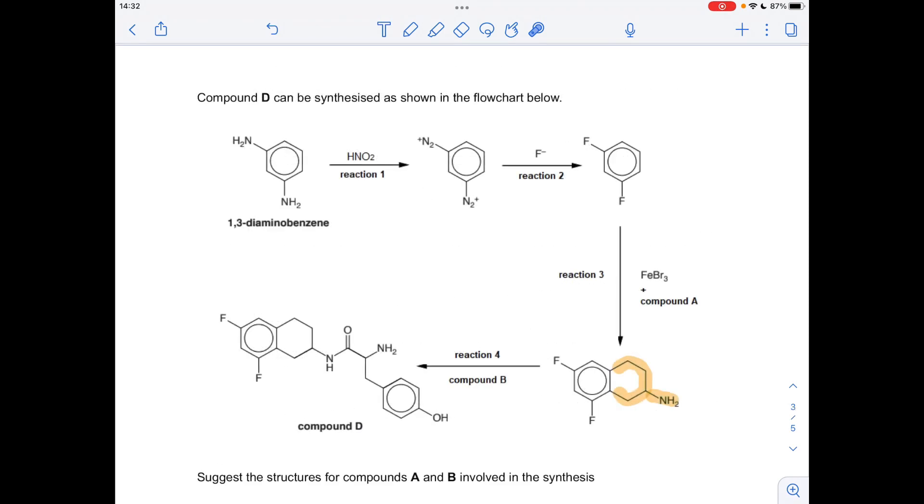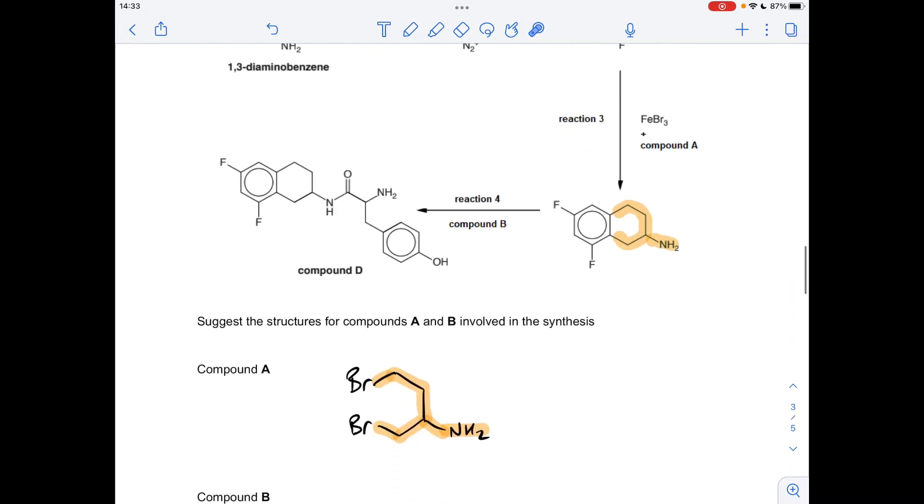So moving on to this flowchart now. We've got to come up with the structures for compounds A and B involved in the synthesis. So how do we get this alkyl group with the amino group, how do we get that onto this part of the benzene ring? Well, we just need halogens at the end of here and here. So that would be the answer for A.